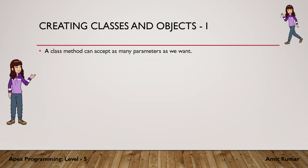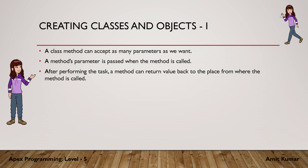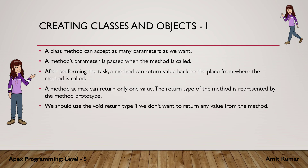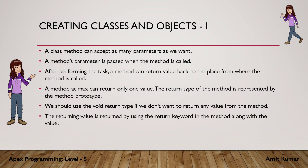A class method can accept as many parameters as we want. A method's parameters are passed when the method is called — they are the values we pass by calling those methods. After performing the task, a method can return a value back to the place from where it was called. A method can return at most one value. We should use the void return type if we don't want to return any value from the method.